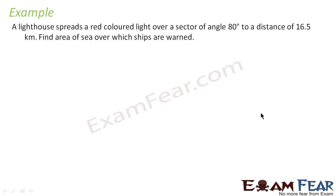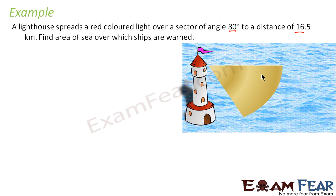Let us take one more example. A lighthouse spreads a red colored light over a sector of angle 80 degrees to a distance of 16.5 kilometers. We need to find the area of the sea covered. The lighthouse throws light in a sector where the angle covered is 80 degrees and the maximum distance covered is 16.5 kilometers.